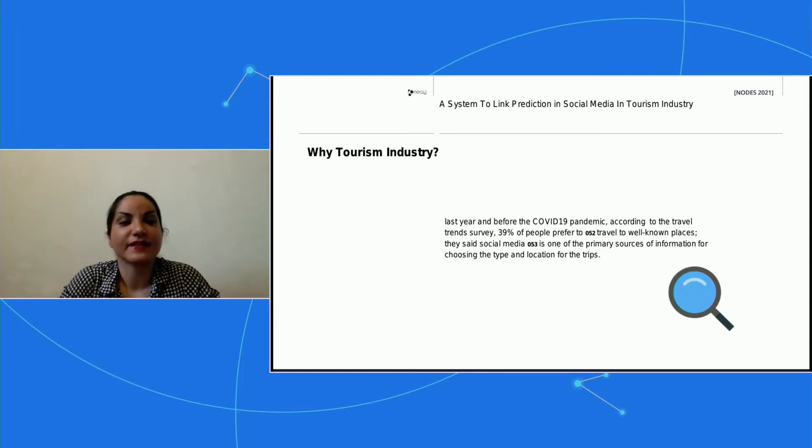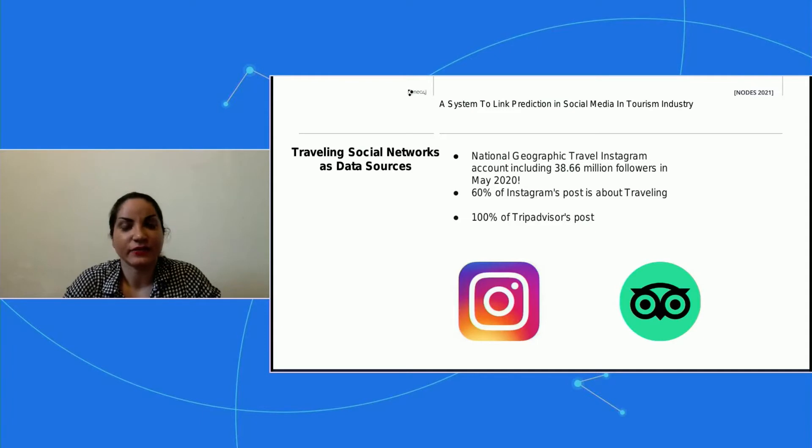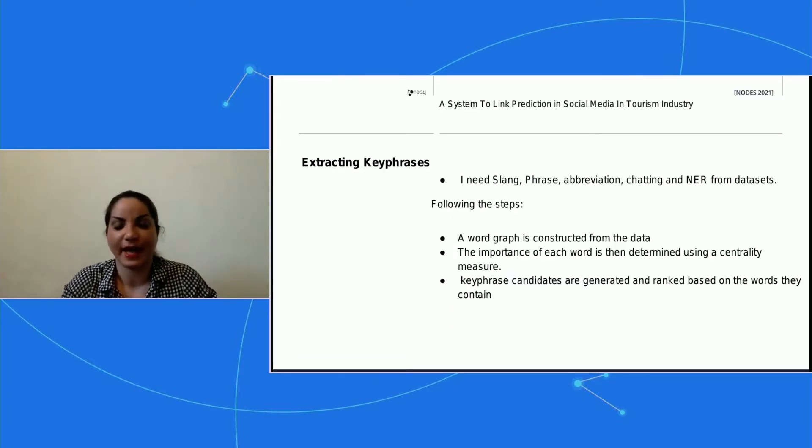In the next phase I'm extracting key phrases, which was very hard and very important. People in social media and in Tripadvisor they are not talking formally. They are misspelling, they have a lot of sarcasm, they're using phrase abbreviations, chatting. For example, in a comment they started 'how are you' and 'what are you doing' and 'what's happened to your child.' But I don't need it, but I have to detect it. And using named entity recognition from dataset, named entity recognition was the most important part of my work.